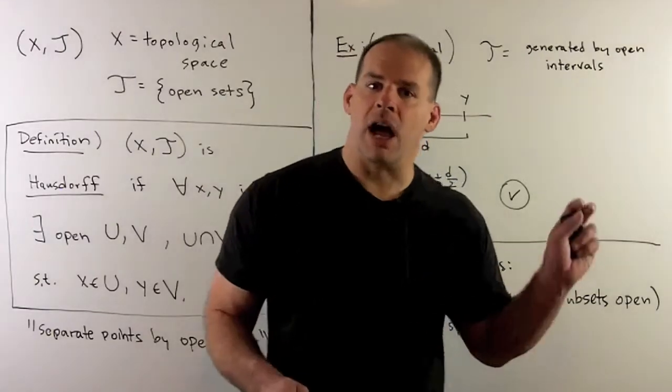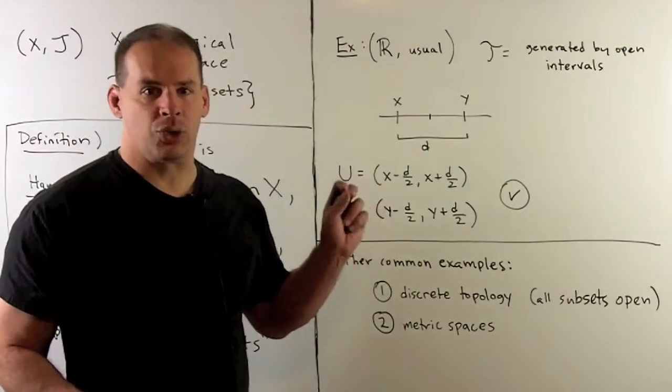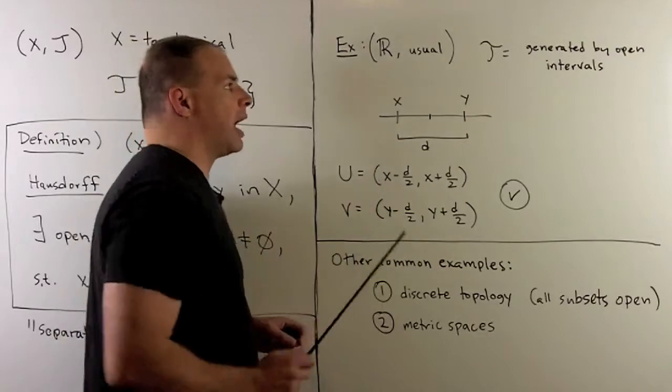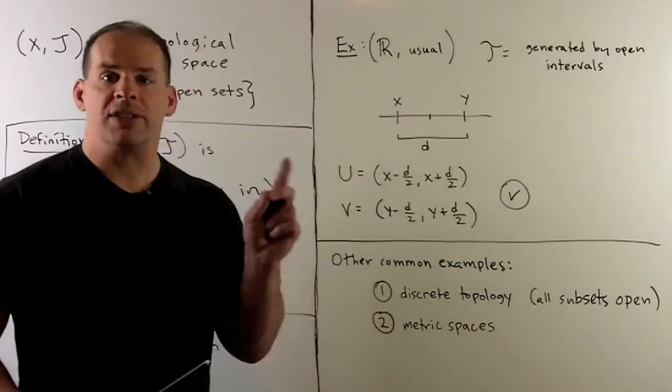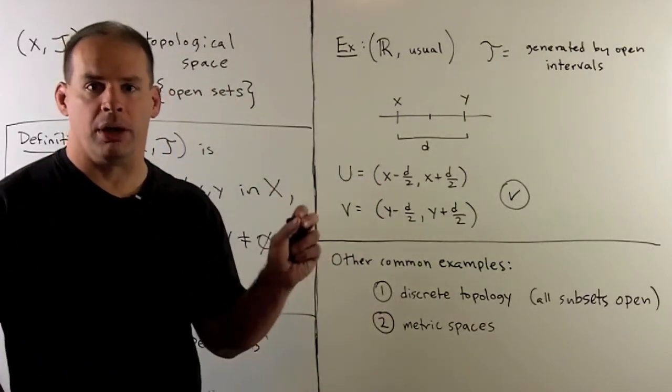Now, the canonical example of a Hausdorff space is given by the real line with the usual topology. So that's the topology generated by the open intervals.